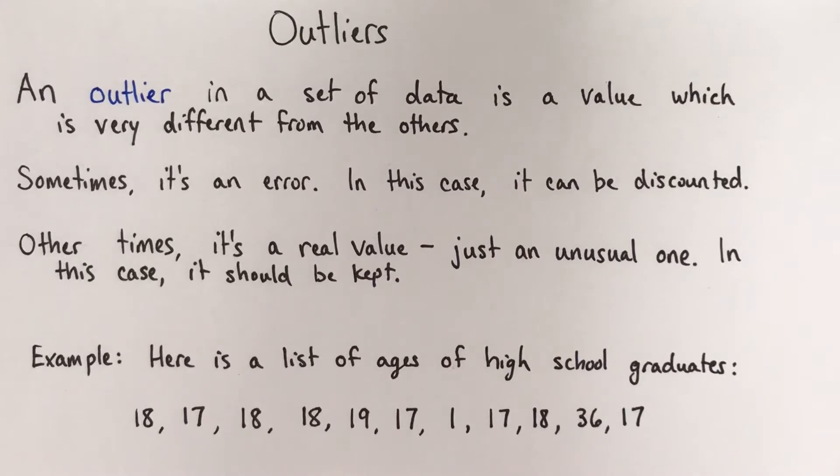So if you look at that list, I hope that there are two numbers that sort of jump out at you as different from the others, and those are the two outliers. There's this one here, the 1, and then this one here, the 36.